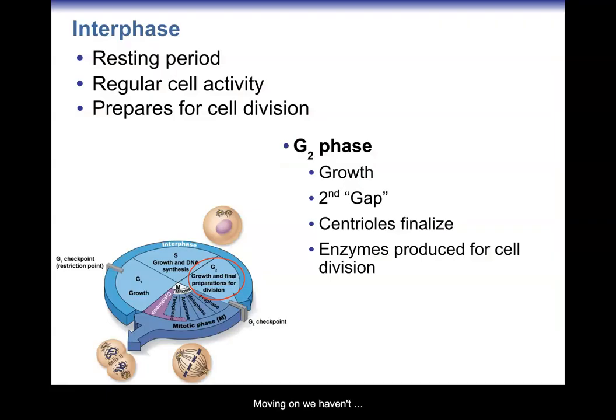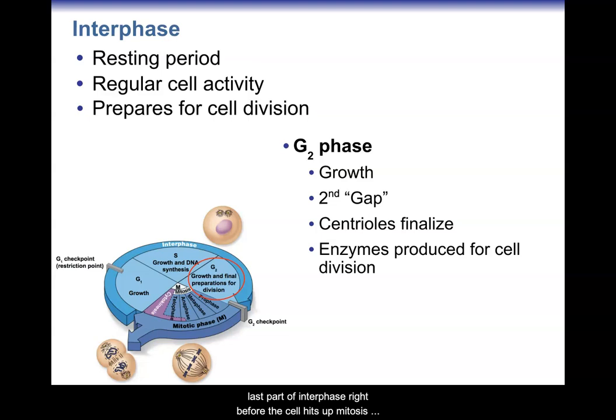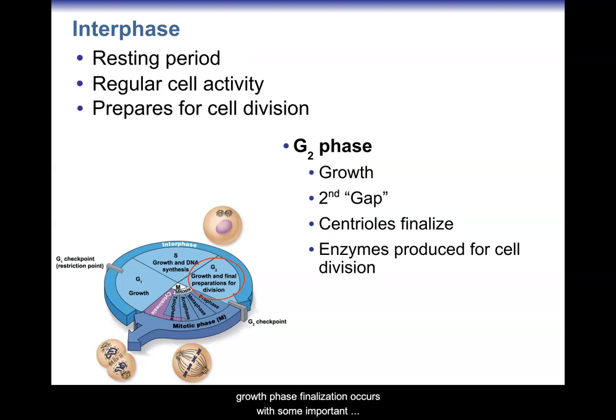We are still in the regular cell activity phase, and the cell is still preparing for cell division. This is the last part of interphase, right before the cell hits mitosis. The cell really wants to make sure it's ready for that extremely important event. This is known as the G2 phase, also known as the second gap or second growth phase. Finalization occurs with some important proteins and enzymes that are going to be part of mitosis.